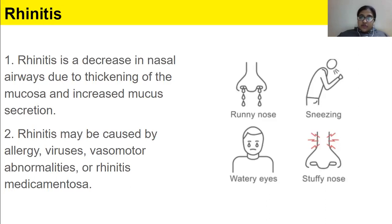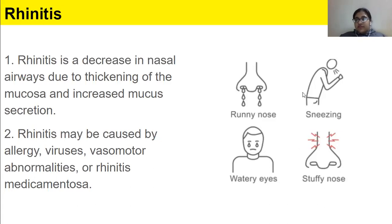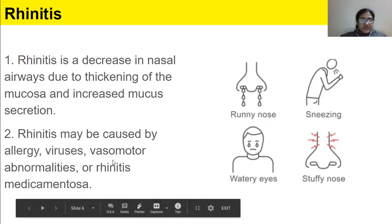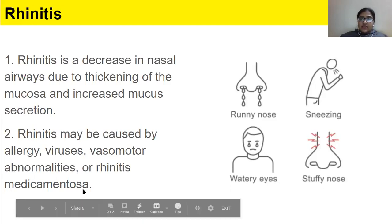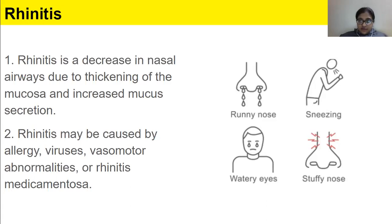There can also be hormonal rhinitis, which can happen when a lady is pregnant or going through the menstrual cycle, or when a person is suffering emotionally. Elderly people can have it with only the symptom of runny nose, which is also characterized as a vasomotor abnormality. Then we have rhinitis medicamentosa, which is rhinitis caused due to excessive usage of decongestants — because of the medication, the person develops rhinitis.